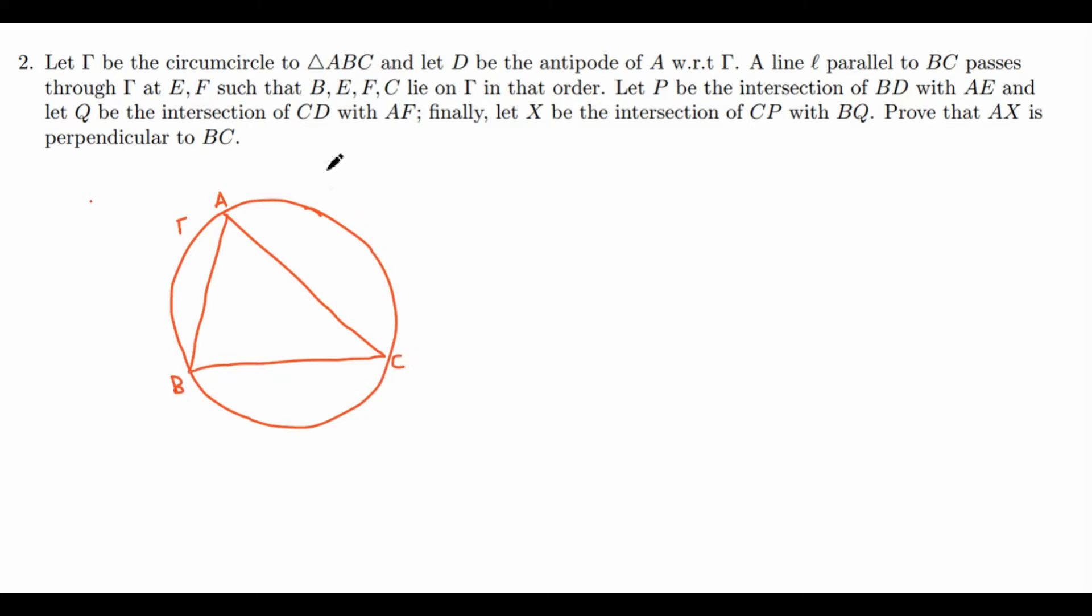And let D be the antipode of A with respect to gamma. So for those of you who don't know, the antipode of a point with respect to a circle is the point that's diametrically opposite to the point you want to take the antipode of with respect to a circle.